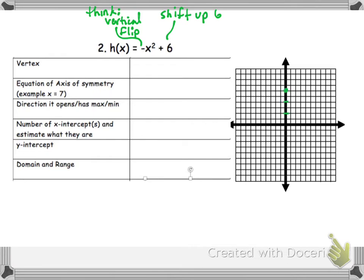So take your parent function and move it up 6, and then flip it upside down, 1, 1, 2, 4, 3, 9, off of that point, and there's our parabola.